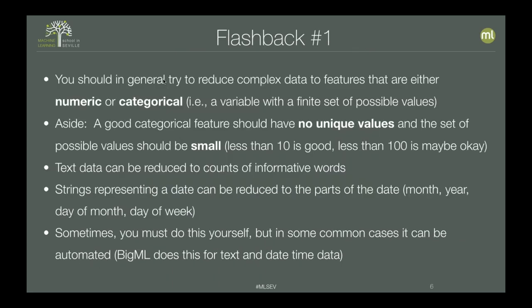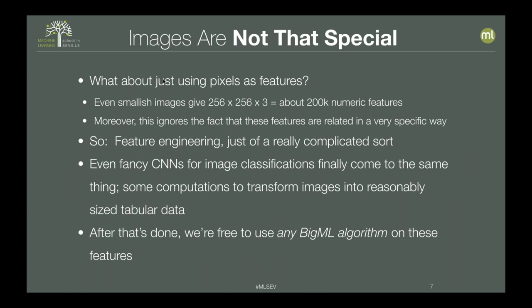Dealing with different types of data in machine learning is about making your data tabular. If you have non-tabular data — text, datetimes, images — all of those need to be reduced to vectors of features in some way. In this sense, images are not that special. All we have to do is somehow reduce an image to a vector of features, to a one-dimensional collection of numbers. The easiest way to do that is just to flatten the image: images are already a collection of numbers, so you just line those pixels up and you have a vector of numbers.